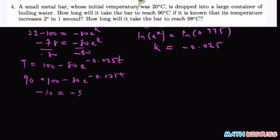equals minus 80 e to the power negative 0.025t. So when you divide both sides by negative 80, you have 0.125